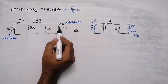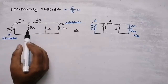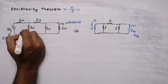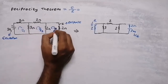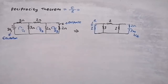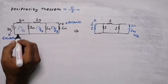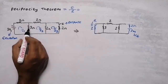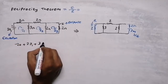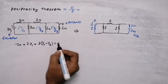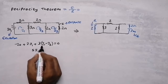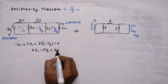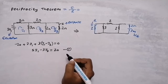First, we can find the current flowing through this 2Ω resistor in the first circuit. I'm going to use mesh analysis and name the meshes i1, i2, and i3. Writing the mesh equation for the first mesh: −20 + 2i1 + 3(i1 − i2) = 0. From this I get 5i1 − 3i2 = 20. This is my first mesh equation.